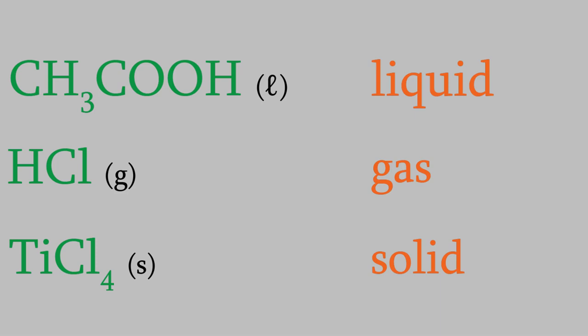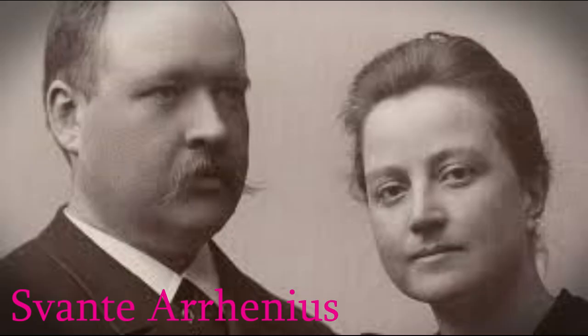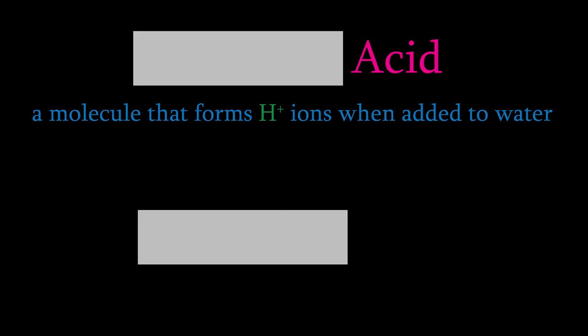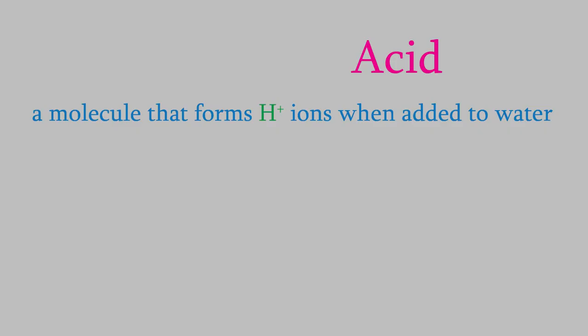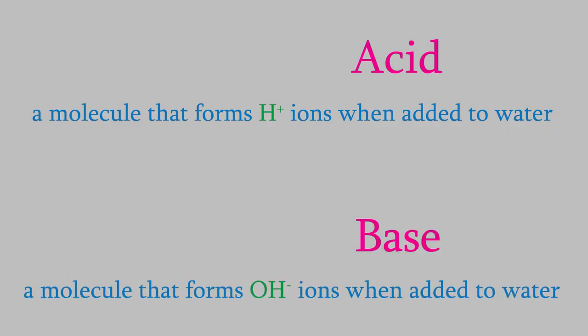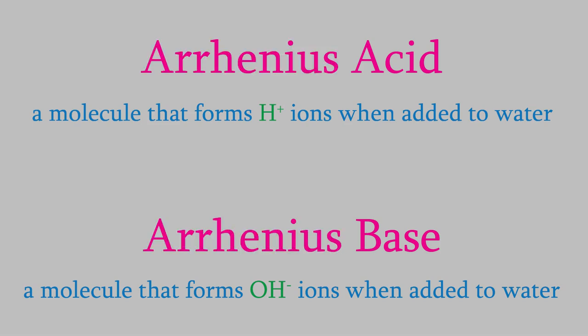There have been several definitions of what an acid or base is. The one most people have heard of was given by the chemist Svante Arrhenius, who we first talked about in video 13 when we were talking about reaction rates. Arrhenius noticed that the acids he studied produced hydrogen ions H+ in water, and the bases produced hydroxide ions OH- in water. Compounds that obey those definitions are called Arrhenius acids and Arrhenius bases.